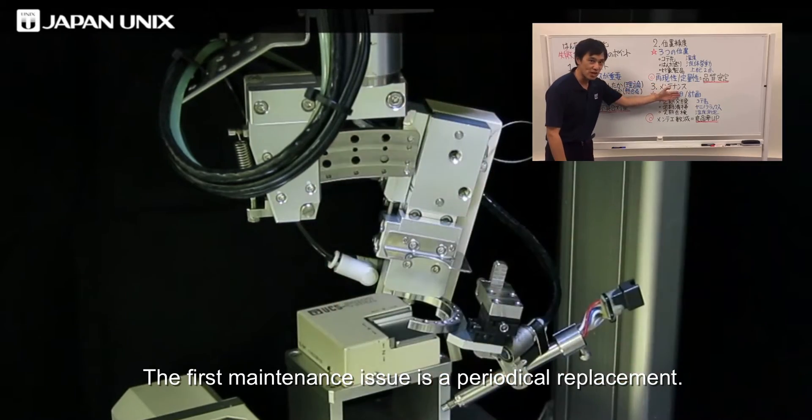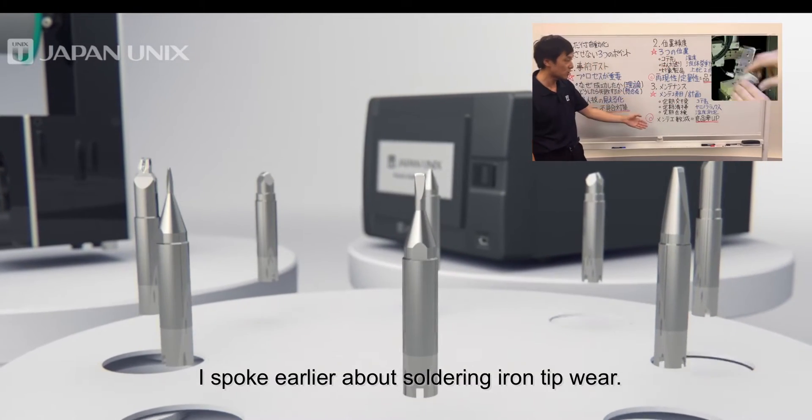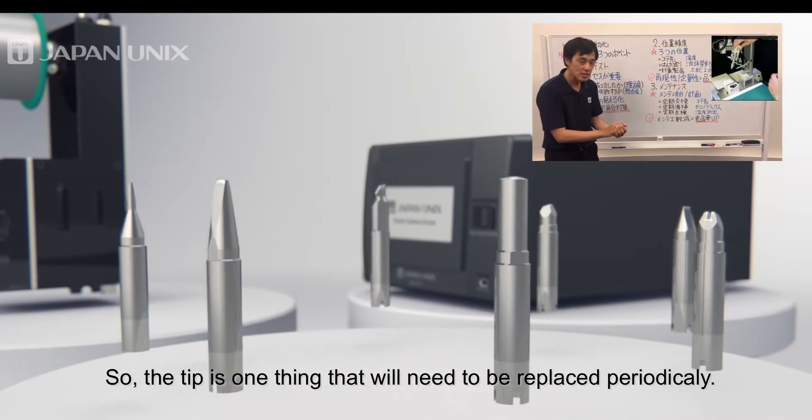The first maintenance issue is periodical replacement. I spoke earlier about soldering iron tip. So, the tip is one thing that will need to be replaced periodically.